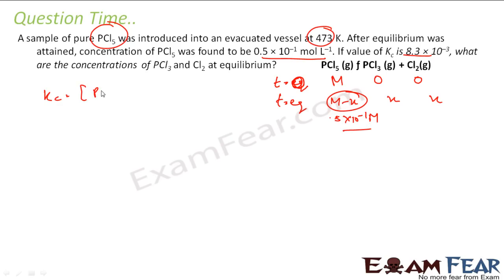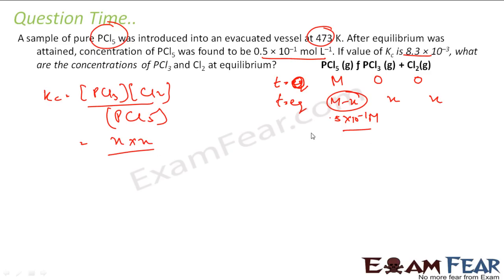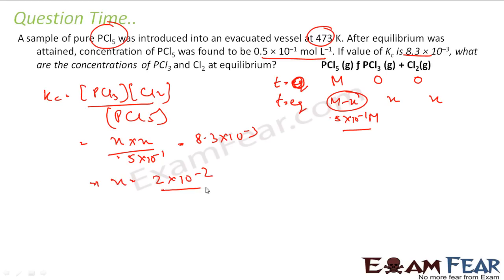My Kc is: concentration of PCl₃ times concentration of Cl₂ divided by concentration of PCl₅. The concentration of PCl₃ is x, Cl₂ is x, and PCl₅ is 0.5×10⁻¹. This value is given as Kc equals 8.3×10⁻³. You solve it and get x equals 2×10⁻² M, because everything is in moles per liter.